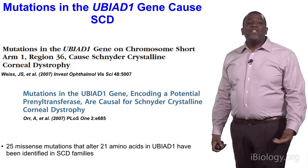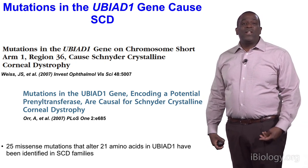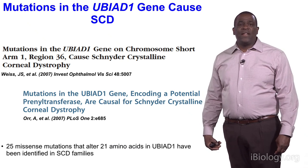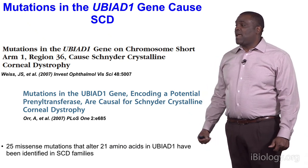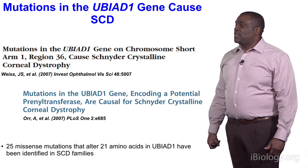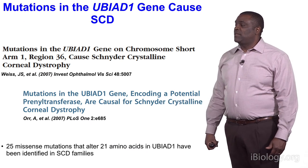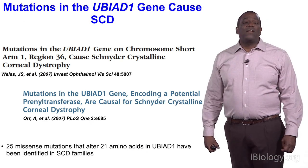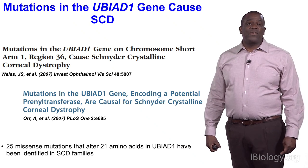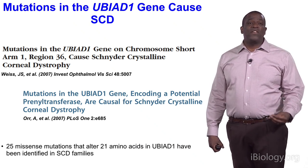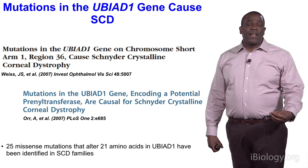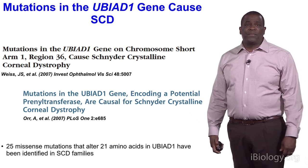Mutations in the gene encoding UBIAD1 cause SCD, as indicated by two early papers in 2007. It turns out that 25 missense mutations that alter 21 amino acids in UBIAD1 have been identified in about 50 SCD families.